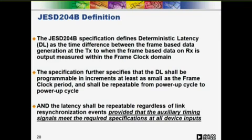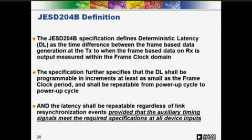The JSD-204B specification defines deterministic latency as the time parallel data is framed to the time it is deframed, measured in frame clock cycle increments. The spec also states that the latency should be programmable in frame clock cycles and should be the same from one power cycle to the next, as well as from one resynchronization event to the next. The key point is that deterministic latency cannot be achieved, as defined by the specification, if any of the auxiliary timing requirements are not met.